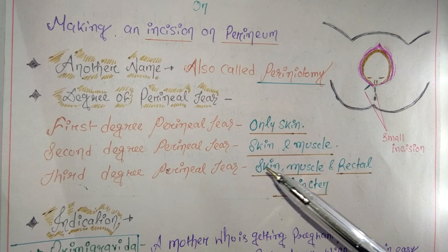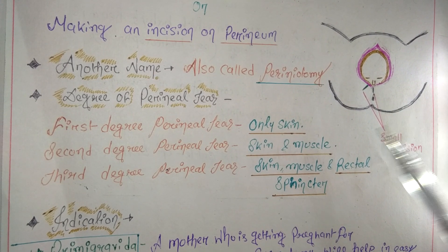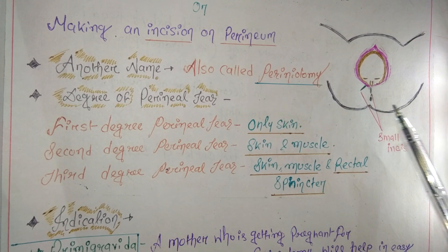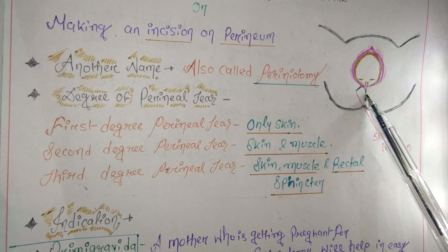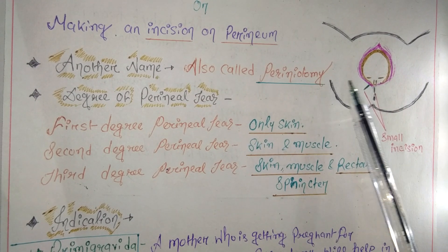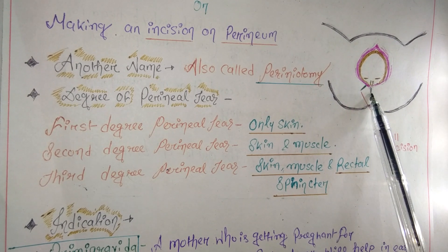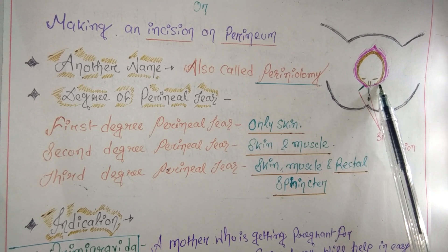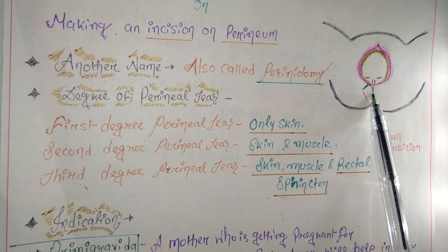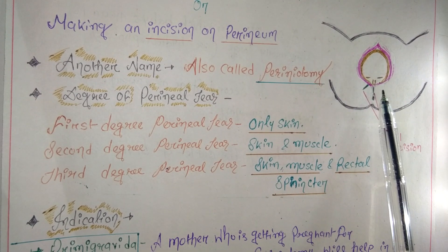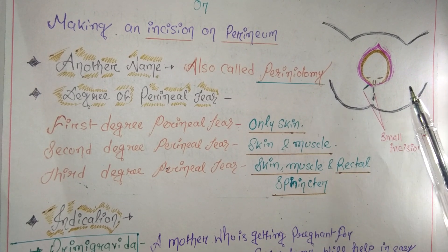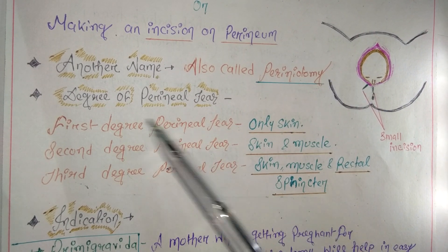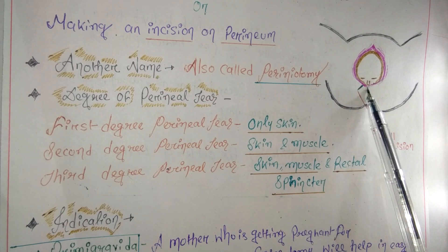Third-degree perineal tear is a very dangerous situation — the skin, muscles, and even the rectal sphincter are all ruptured. The rectal sphincter is located just above the rectum. This entire portion gets injured. During delivery there is a high risk of second- or third-degree perineal tear, so we perform episiotomy, which involves only the skin — equivalent to a first-degree tear — and is the minimum amount of injury.